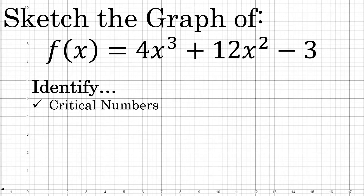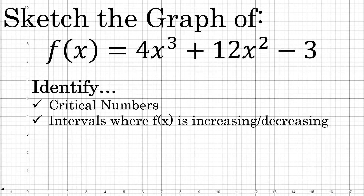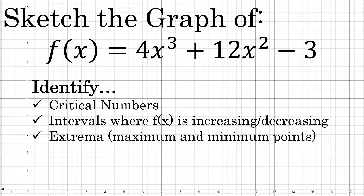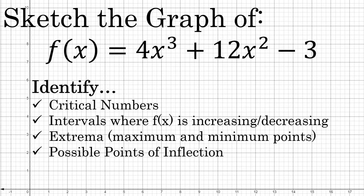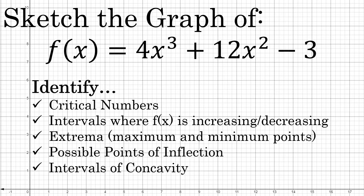These properties include the critical numbers — places where the first derivative equals zero or does not exist — which we'll use to identify intervals where the function is increasing or decreasing. We'll then identify extrema, which are maximum and minimum points. Using the second derivative, we'll find possible points of inflection, intervals of concavity, and actual points where the graph changes inflection. Let's begin.